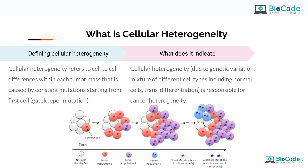In a normal individual, each cell has a different expression pattern as compared to the other cell. The cell right next to it might have a different expression pattern based on its requirements and function. For example, a B cell has a different gene expression pattern compared to a T cell, and that is what makes the B cell a B cell and the T cell a T cell. The cell-to-cell differences within each tumor mass, caused by constant mutations starting from the first cell, is known as cellular heterogeneity.